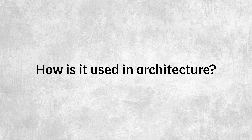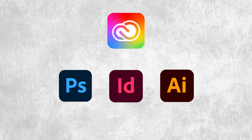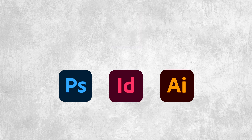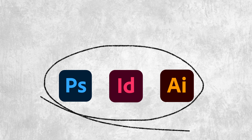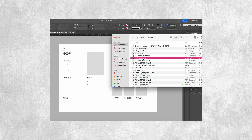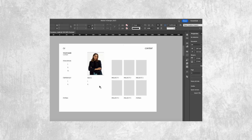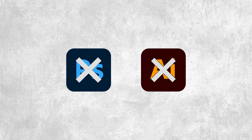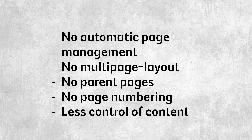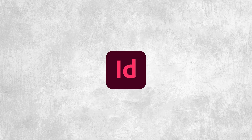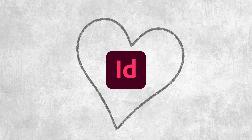What is InDesign and how is it used in architecture? InDesign is one of three main Adobe programs, along with Photoshop and Illustrator, for architects. It's incredibly helpful to learn all three together as they complement each other. InDesign is specifically designed for layout and is fast and efficient for that purpose. Please don't use Photoshop or Illustrator for layout — those programs don't offer automatic page management, and you can't create multi-page layouts in a single file. There are no master pages or parent pages, no automatic page numbering, and you'll have less control handling large amounts of text and images. So if you want to create a proper portfolio, InDesign is the right tool.